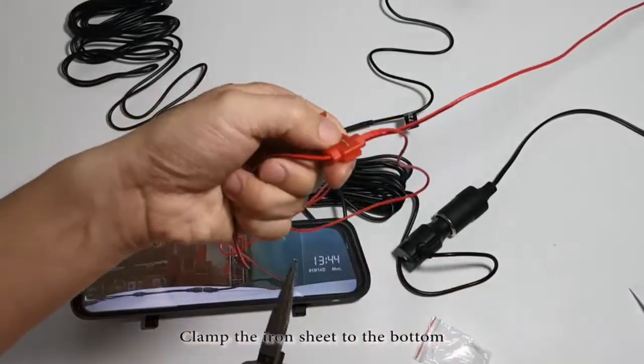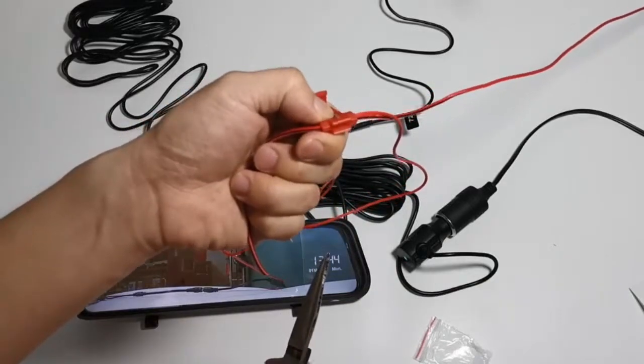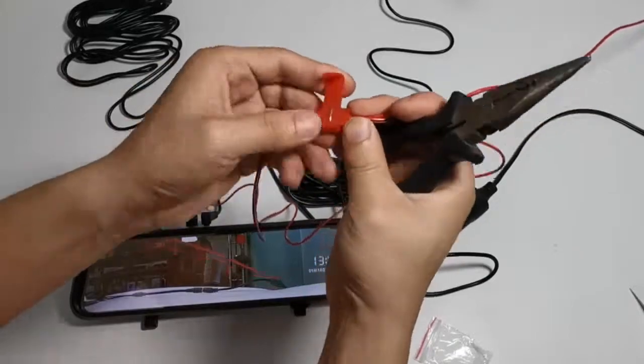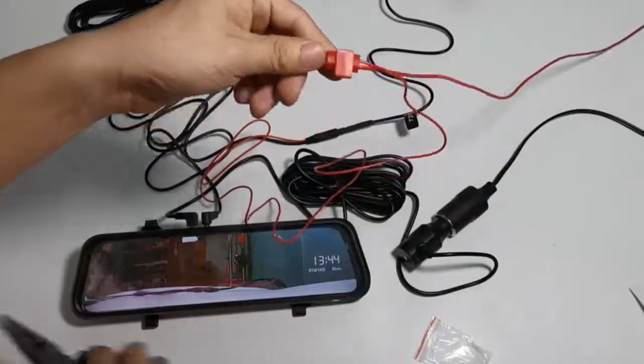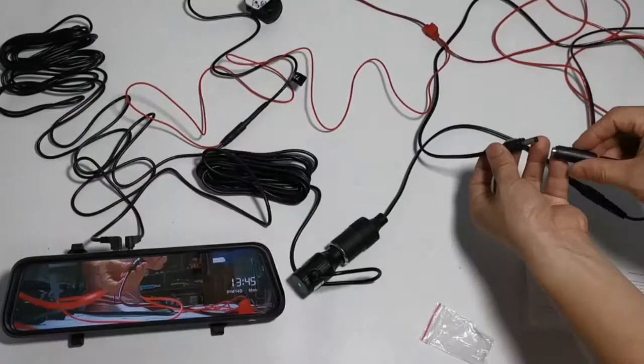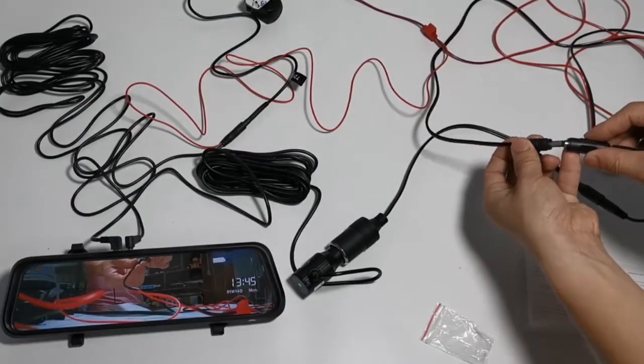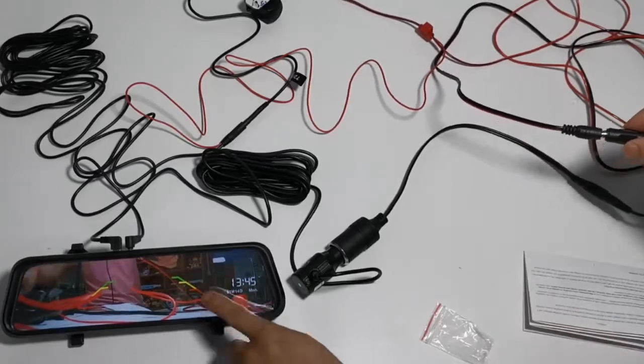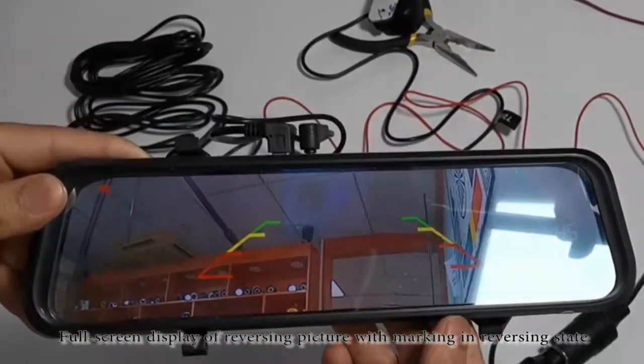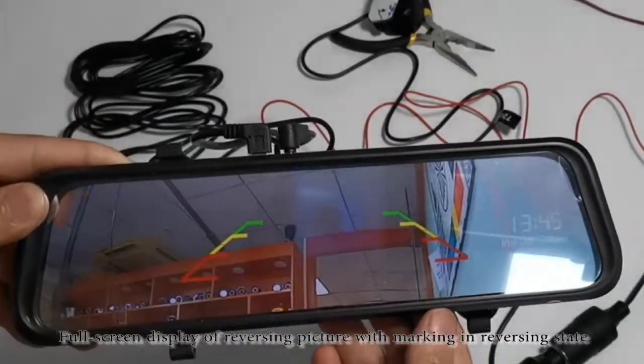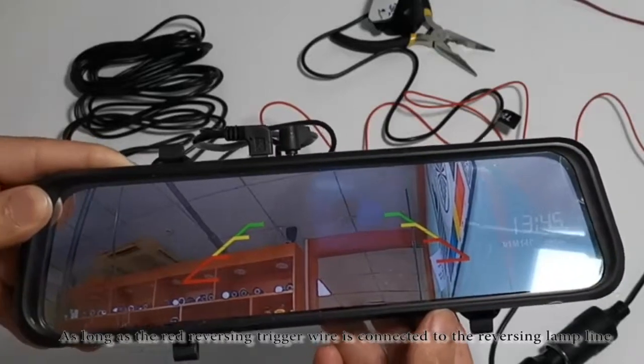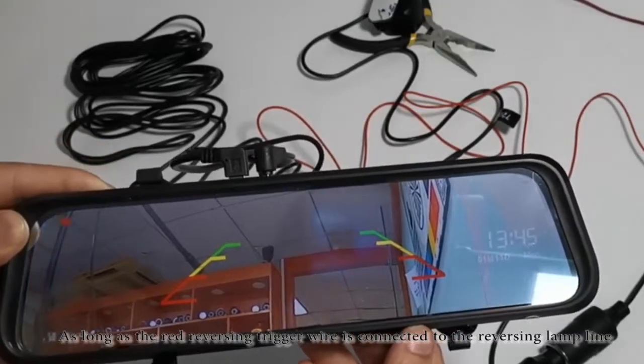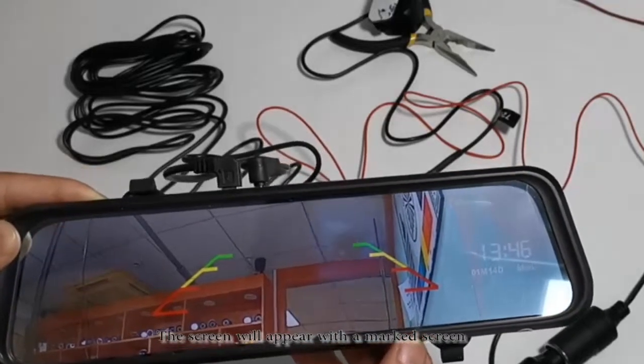Clamp the iron sheet to the bottom. Turn to reverse gear. Full screen display of reversing picture with marking in reversing state. As long as the red reversing trigger wire is connected to the reversing lamp line, the screen will appear with a marked screen.